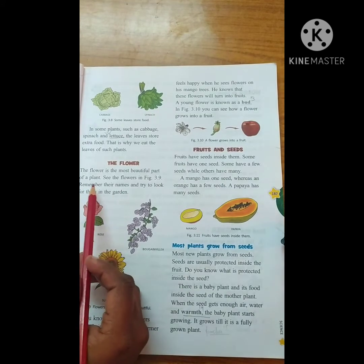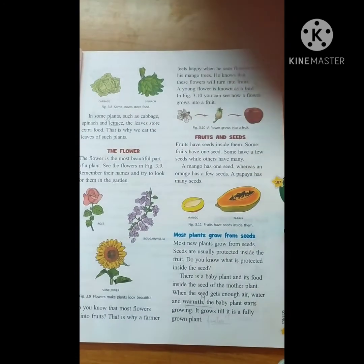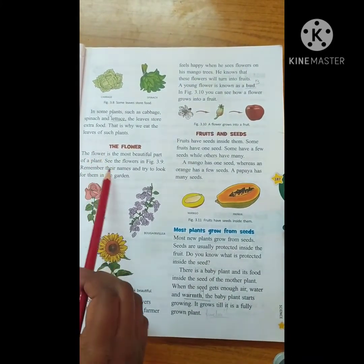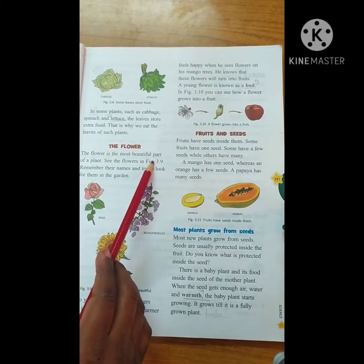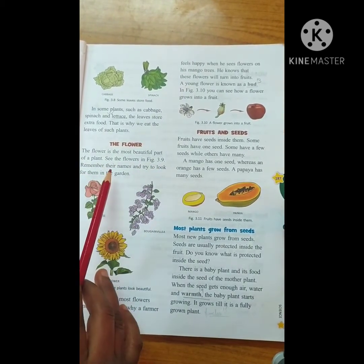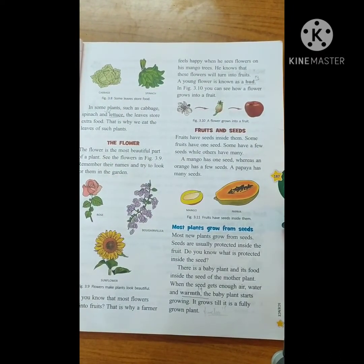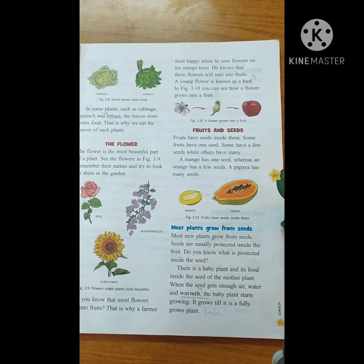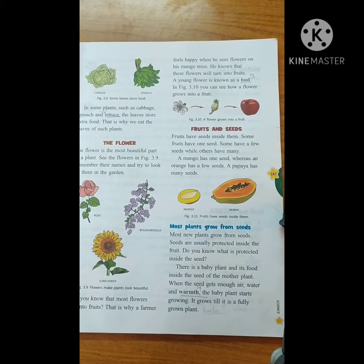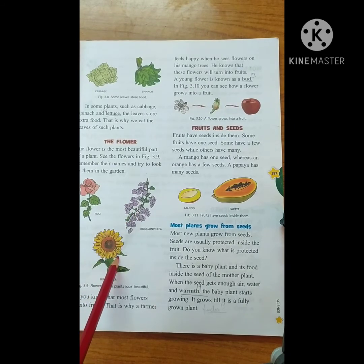The flower is the most beautiful part of a plant. See the flowers in figure 3.9, remember their names and try to look for them in the garden. These are the flowers which are very beautiful in nature — just try to find them in your neighborhood. This is the rose, this is the bougainvillea, and this is the sunflower.